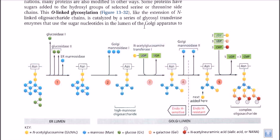Whatever protein is produced in the ER needs to go through this overall system to make the protein function properly. Making the protein alone is not enough — you have to ensure it is properly folded, which is called post-translational modification, and you have to attach different sugar moieties to it. These sugar moieties help target the protein to particular locations and also help it function as combined molecules, as we can see in this picture.